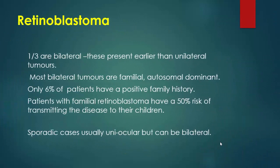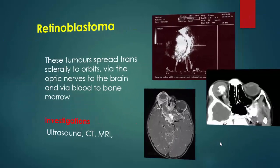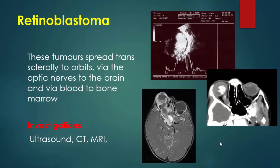One third of retinoblastoma cases are bilateral and present earlier than unilateral tumors. The bilateral tumor is mostly the heritable form — familial and autosomal dominant. Only 6% of patients have a positive family history. Patients with familial retinoblastoma have a 50% risk of transmitting the disease to their children. Sporadic cases are usually uniocular but can be bilateral. Retinoblastoma can spread transscleral to the orbit, via the optic nerve to the brain, and via blood to the bone marrow.